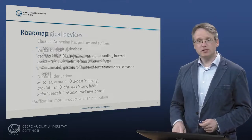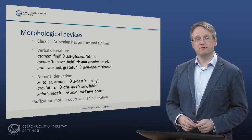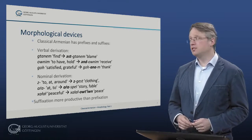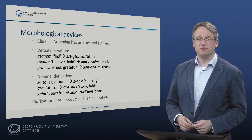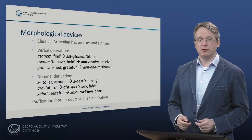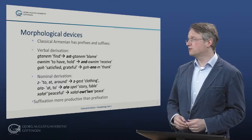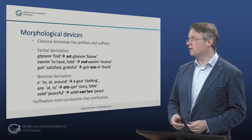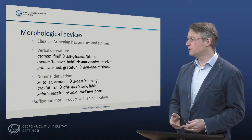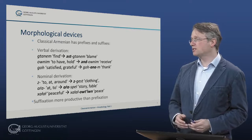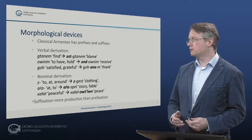What are the morphological devices used for forming new words? Let's look at derivation first. Classical Armenian uses both prefixes and suffixes to form verbs and nouns. Here are some examples: götanem – to find, and derived from that, östgötanem – to blame. Or unim – to have, hold, and undunim – receive. Or goch – satisfied, grateful, and from that we can derive a verb gohanam – to thank.